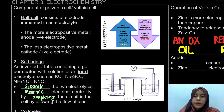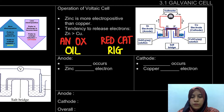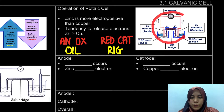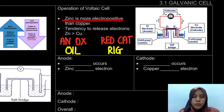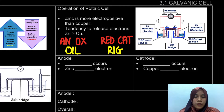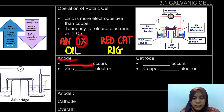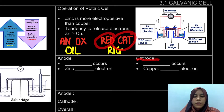Now we'll look at the operation of the galvanic cell. We have two half cells — each with an electrolyte and electrode — connected by a salt bridge and a voltmeter. Here we have zinc and copper. Since zinc is more electropositive than copper, zinc will be the anode and copper will be the cathode. Recall ANOX and OILRIG: at the anode, oxidation occurs; at the cathode, reduction occurs.